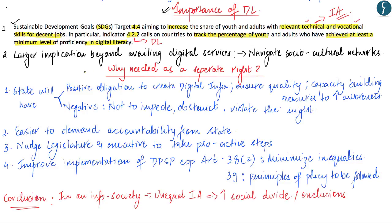Moreover, according to the author, digital literacy will have much larger implications for people beyond merely availing digital services. Digital literacy will help people to navigate socio-cultural networks — access to internet is not just to avail government services, but it also helps people to connect with one another, see what is happening around the world, and basically help them come out of their cocoon-like existence. Since people will be exposed to a new world, they will be in a better position to navigate their social and cultural networks.